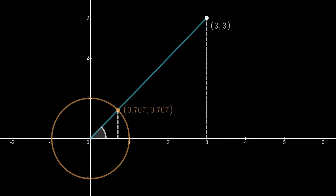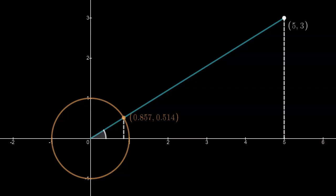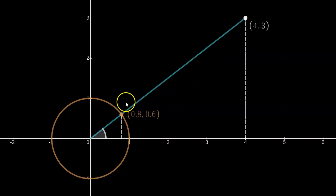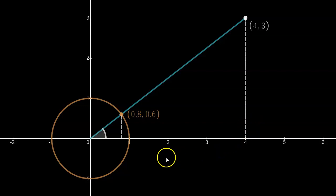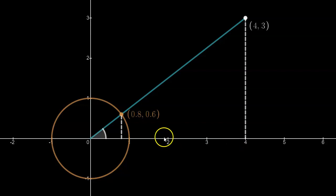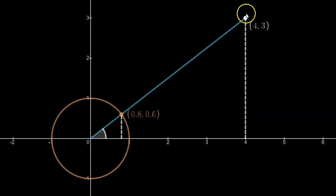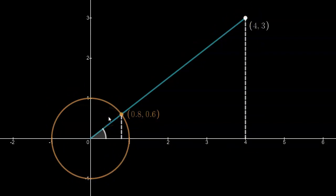Let's look at a relatively easy example. If I move this to a base length of 4 and a height of 3, I don't need my calculator because I know this is a 3-4-5 right triangle. The cosine of this angle would be the adjacent side divided by the hypotenuse: 4 divided by 5, which is 0.8. And the sine of this angle would be the opposite side 3 divided by the hypotenuse 5, giving 0.6. You don't really need the unit circle if you know these dimensions, and if you don't know the hypotenuse you can figure that out first.